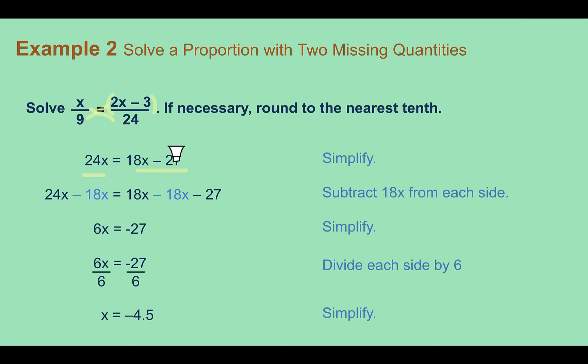Now, we just need to go through and solve for the variable on both sides. So subtracting 18x, we get 6x equals negative 27. Dividing by 6, x must be equal to negative 4.5.